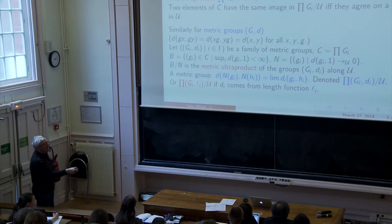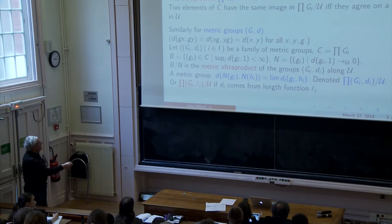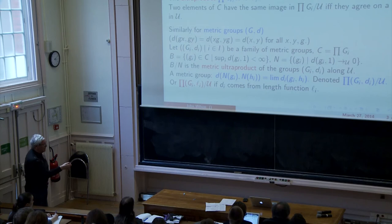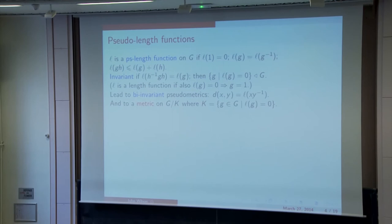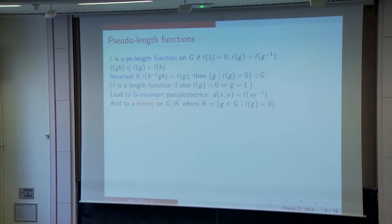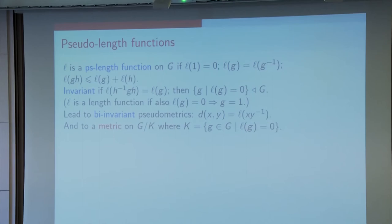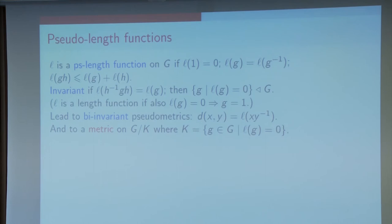So where are these metrics going to come from? They're generally going to come from length functions. I simplify the notation like that, write the length function if d is actually coming from a length function. What is a length function? Well, let's start with pseudo-length functions. They satisfy the obvious properties: the identity element has zero length, inverses have the same length, and length is sub-additive on products. This pseudo-length function is invariant if it's constant on conjugacy classes. And then the set of elements with zero length is a normal subgroup.